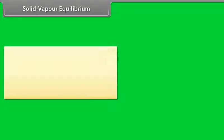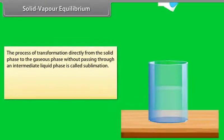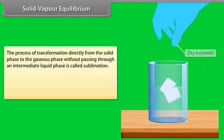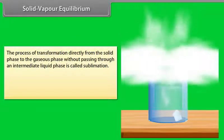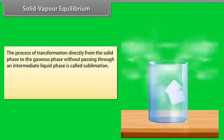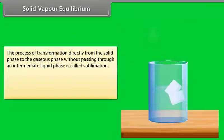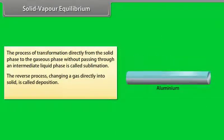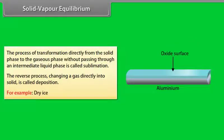Solid-Vapour Equilibrium: The process of transformation directly from the solid phase to the gaseous phase without passing through an intermediate liquid phase is called sublimation. The reverse process — changing a gas directly into a solid — is called deposition. For example, dry ice.